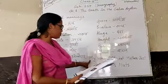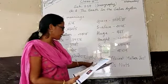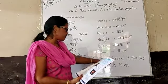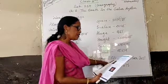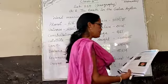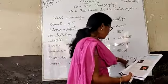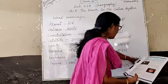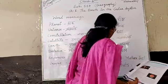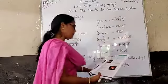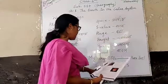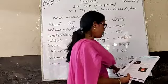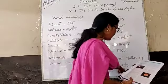Each word stands for a planet: May is Mercury, Various is Venus, Efficient is Earth, Mother is Mars, Just is Jupiter, Sir is Saturn, US is Uranus, and Nuts is Neptune. This mnemonic helps you remember all the planets.